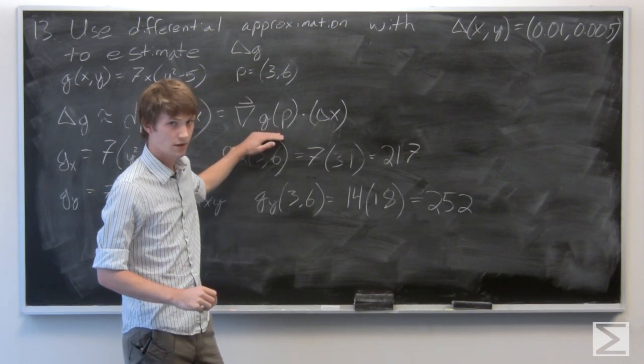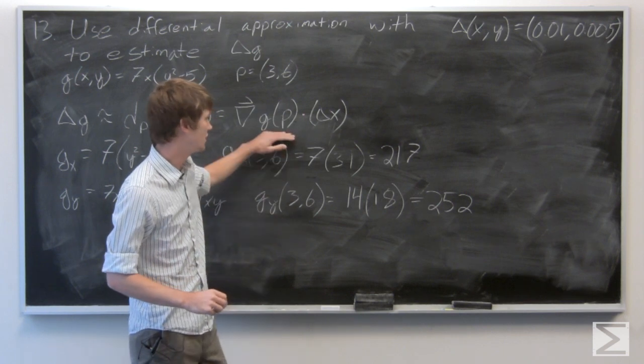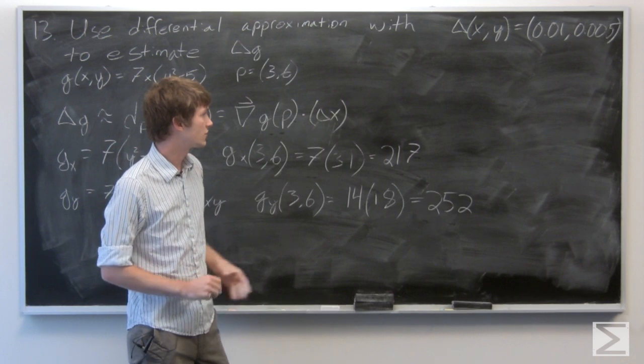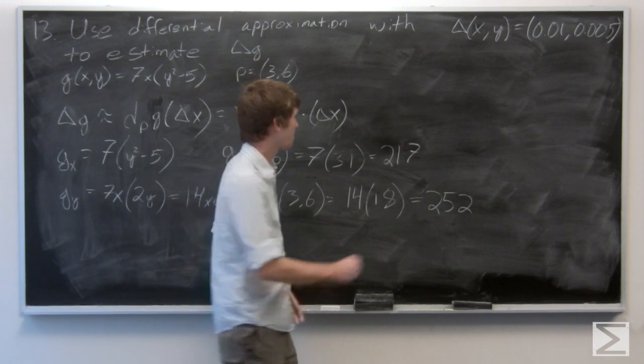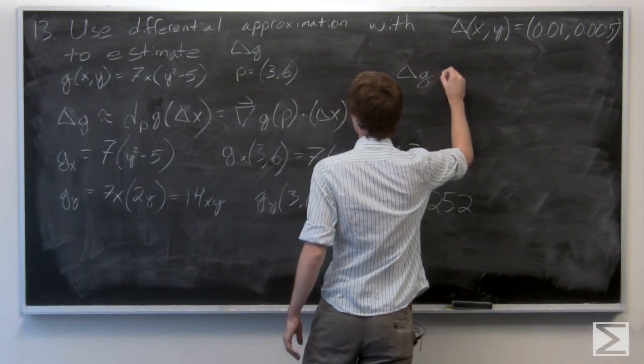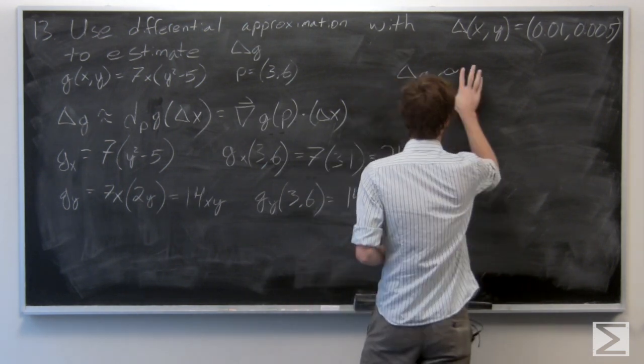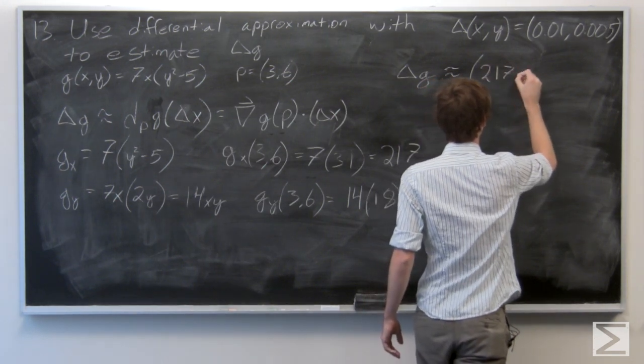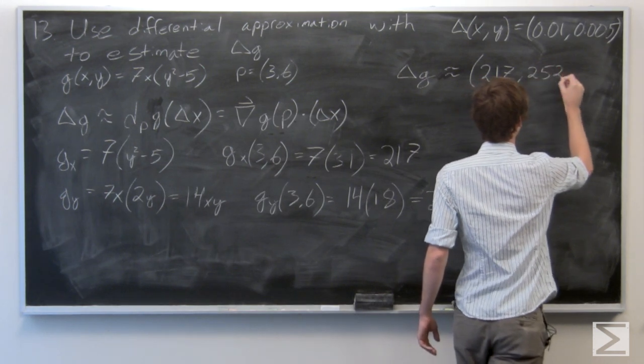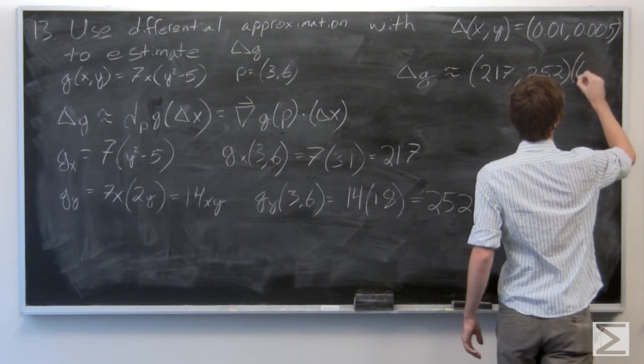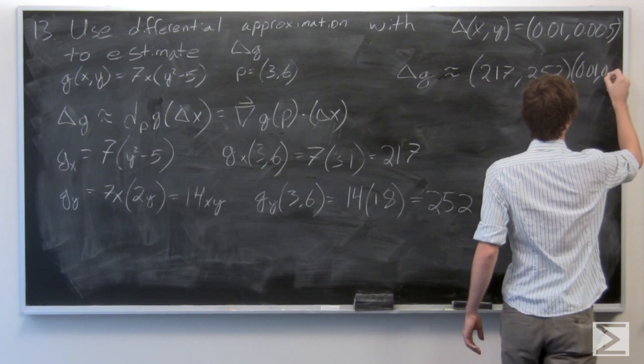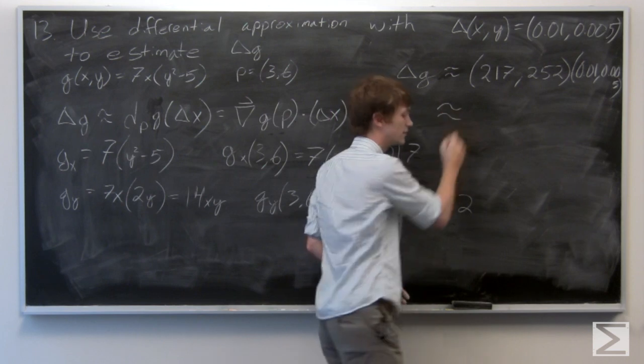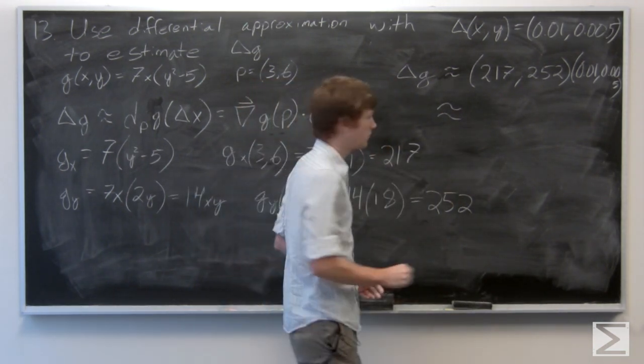OK. So now we want to calculate the gradient vector of g at p, which is 217, 252, and we're going to dot it with our change in x, which is given to us in the problem. And we get that delta g is approximately 3.43.